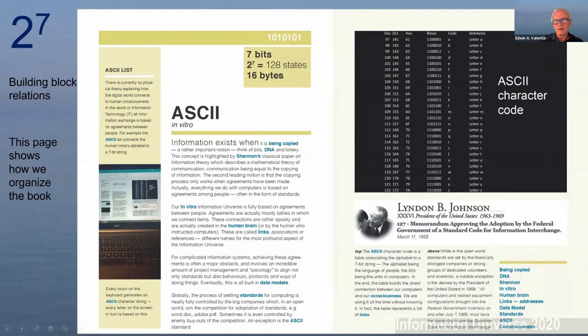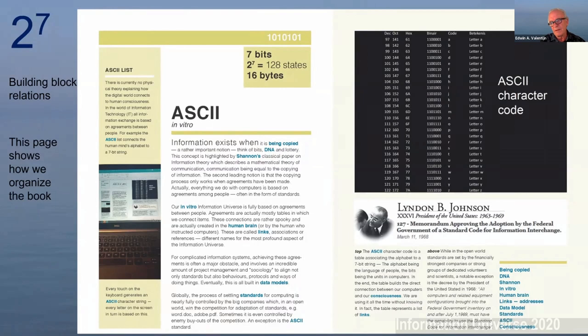I wanted to show you this page to illustrate what we do on typical pages. We have seven bits, and 2 to the power 7 means 128 states — 128 symbols in the alphabet and 128 different bit strings. On the lower right you can find links to other pages. Each page can be read in standalone mode, and by following the links, you can make your own storyline through the book. In the e-book version, you can create your own storyline along the pages.